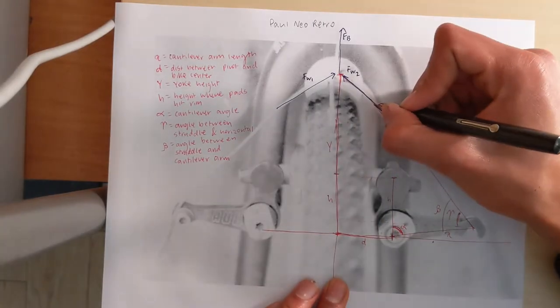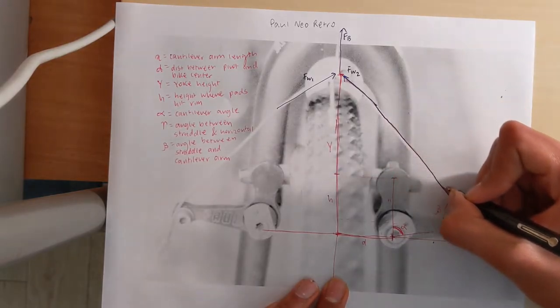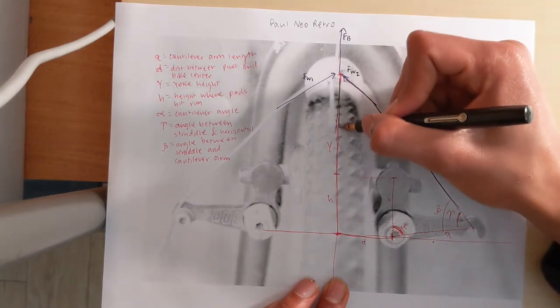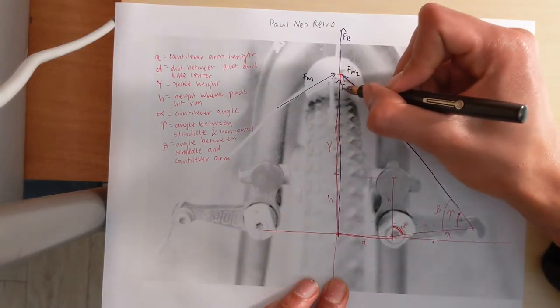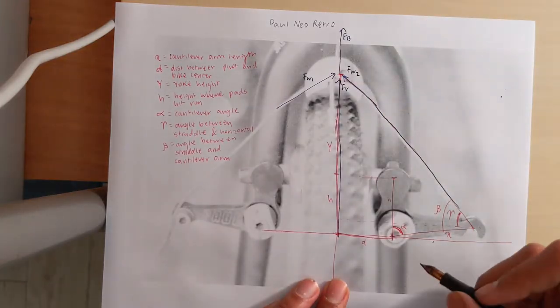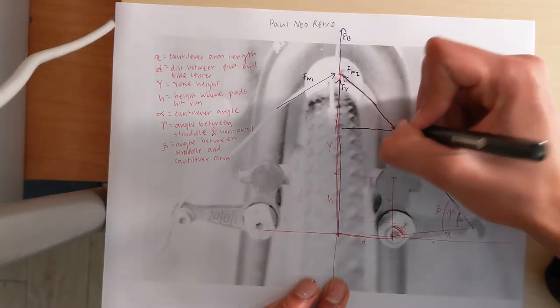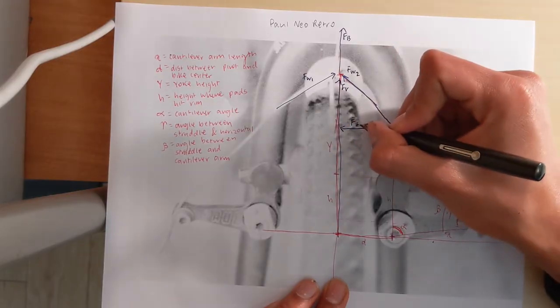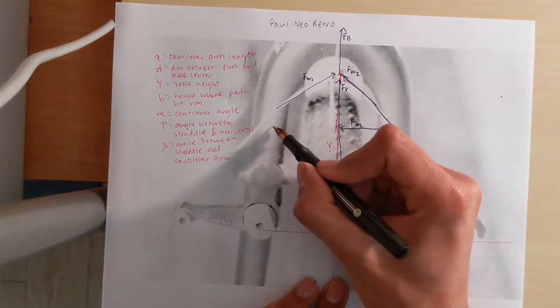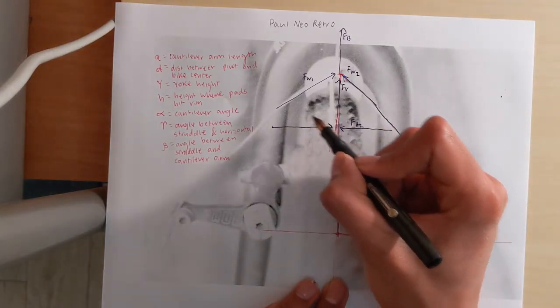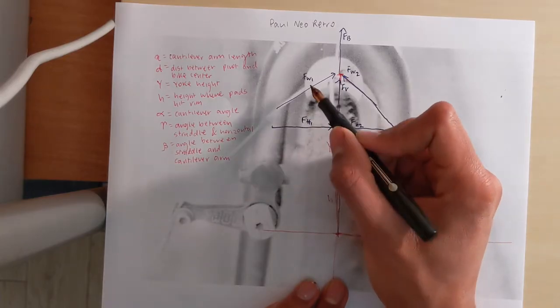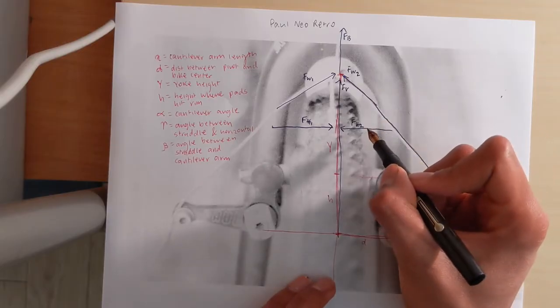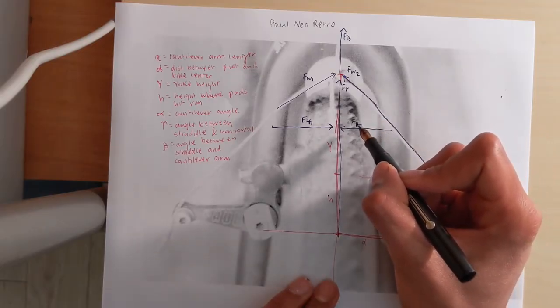So let's split up Fw2 further. Fw2 is broken into two parts, a horizontal component and a vertical component. So this is F vertical, and F horizontal. We can call it F horizontal 2. But you can see that if we draw F horizontal 1 for Fw1, Fh1 and Fh2 are the same magnitude in opposite directions and thus cancel each other out.